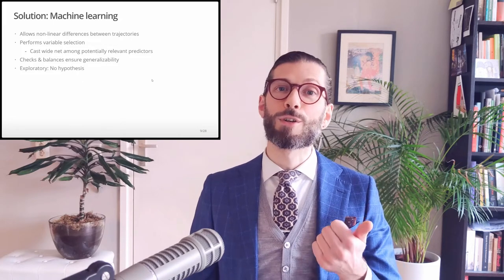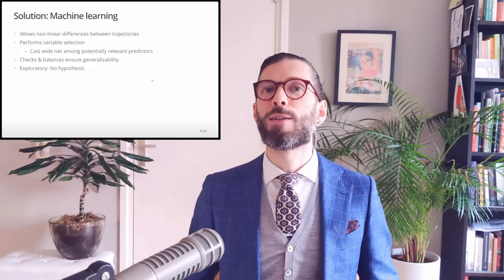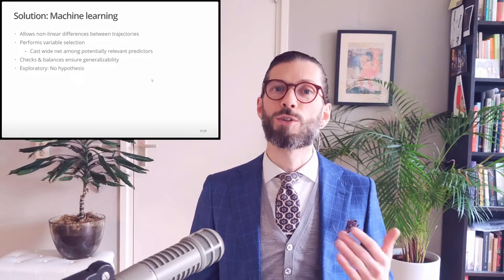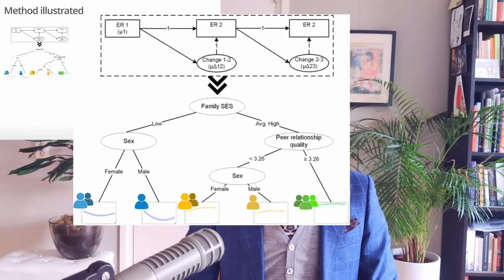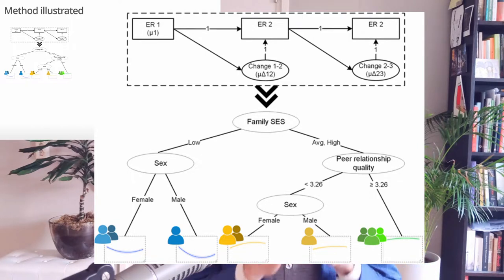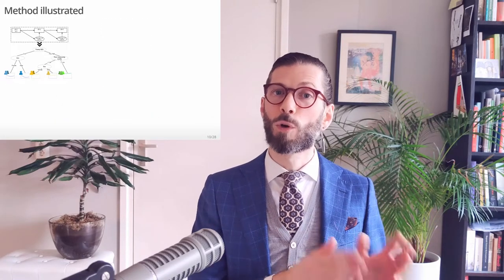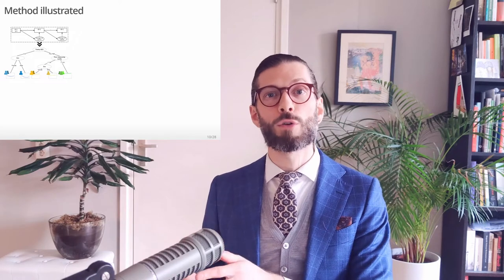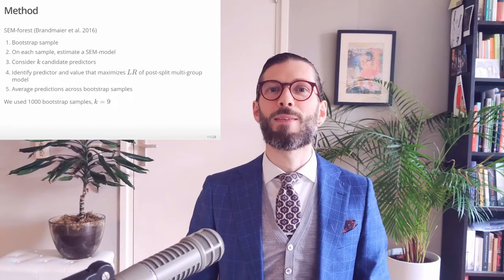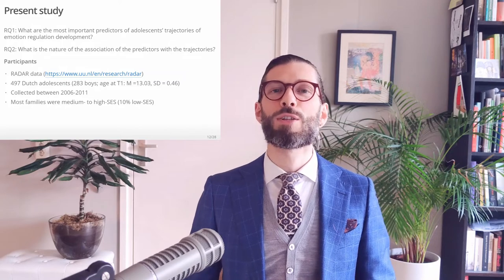This method allows non-linear differences between trajectories. It performs variable selection, which means we can include as many predictors as we want. And it incorporates checks and balances to ensure the results will generalize to new samples. So how does this method work? Very simply put, we first fit a latent growth model to adolescent scores on difficulties in emotion regulation. And then we use a kind of decision tree algorithm to split the sample based on the predictors into groups that are maximally homogeneous with respect to their growth trajectories. So the sample is split with respect to predictors to maximize similarity in growth trajectories. This algorithm was invented by Andreas Brandmeier at the Max Planck Institute Berlin. And if you freeze frame, you can see it explained in simple steps.